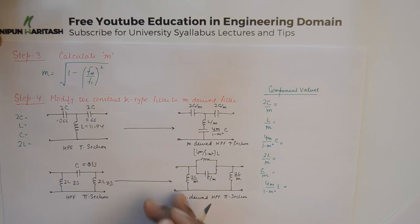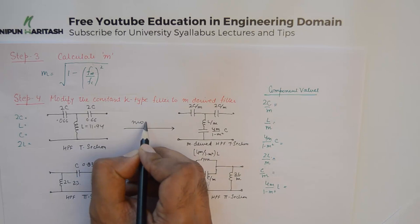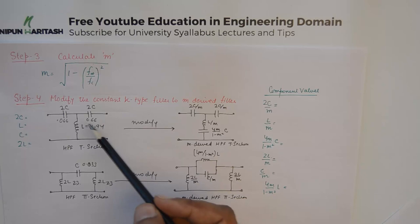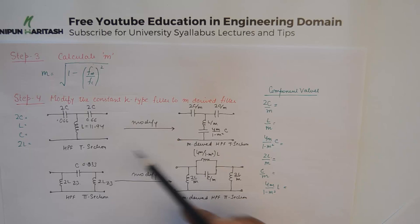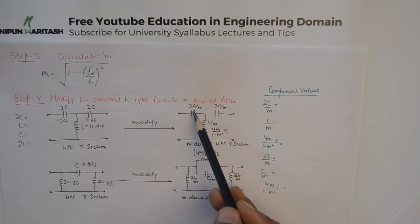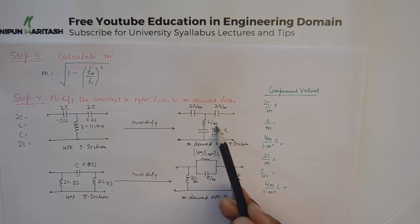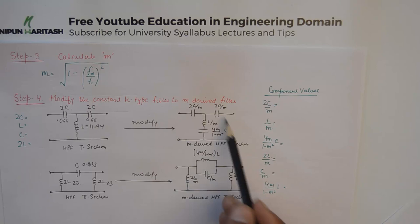This is the constant-k type filter — this is the T section and this is the Pi section. The series arm contains a capacitor and the shunt arm contains an inductor for a high pass filter. We need to modify it to an m-derived filter where the values of 2C in the series arm change to 2C/m, the value of L in the shunt arm changes to L/m, and an additional component dependent on the series arm is 4m / (1 - m²) × C.